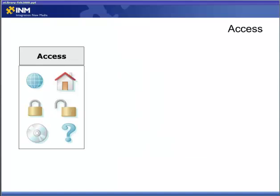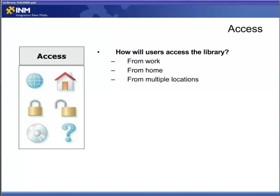The third pillar is looking at how users are going to access your library. Are they going to be coming from a work computer, from home, or from multiple locations? Also consider connections — are they coming across a local area or wide area network? If you're building an internal library, is it only available through the network or through a VPN connection? If that's the case, there are some considerations that tie into your user management functionality.